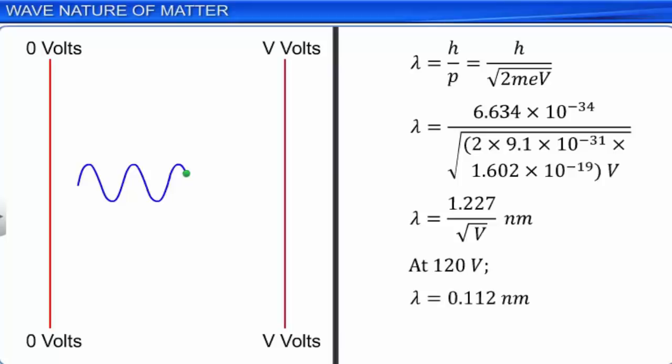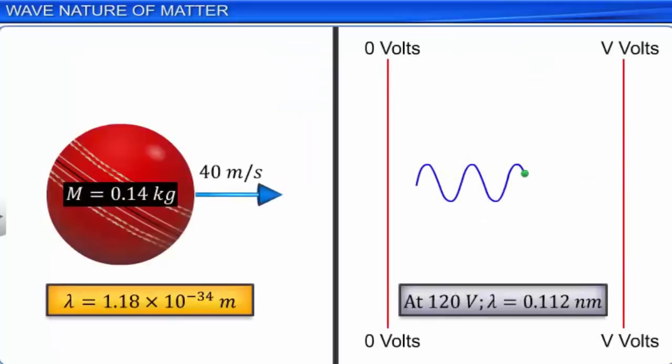For the ball, the De Broglie wavelength is beyond any measurement possible and hence can be considered as negligible. Whereas the De Broglie wavelength for the electron is of the order of the spacing between the atomic planes in crystals. This is the reason why macroscopic objects in our daily life do not show wave-like properties, whereas the De Broglie wavelength is significant and measurable in the subatomic domain.